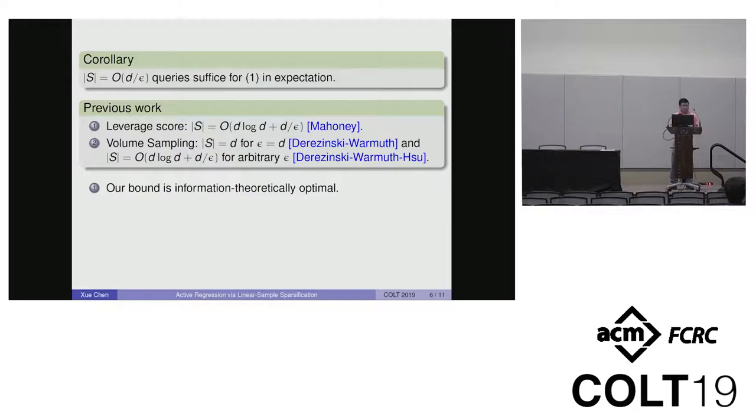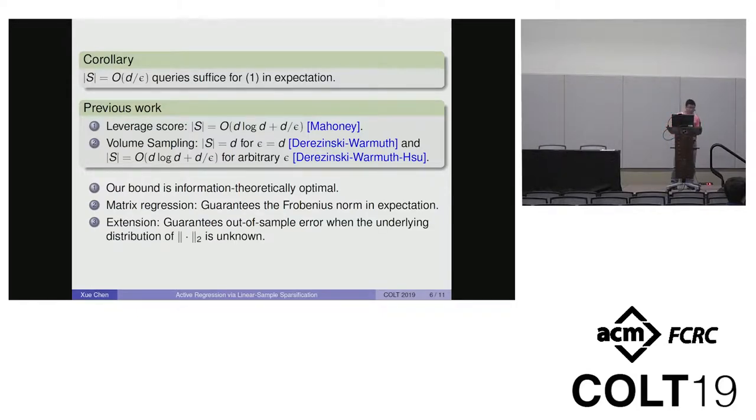A few remarks about our results. First, our bound is information-theoretically optimal up to a constant. Second, if we replace vector Y by a matrix, our algorithm also guarantees the Frobenius norm in expectation for matrix regression. Finally, we give extensions from in-sample error to out-of-sample error when the underlying distribution of the L2 distance is unknown.